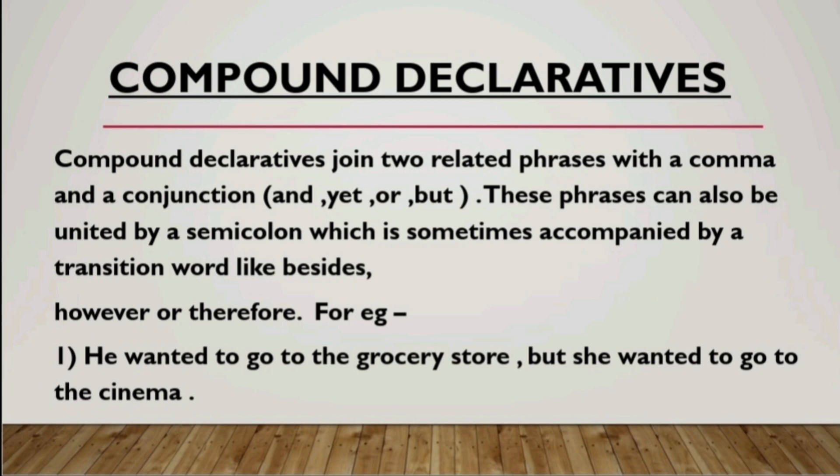Have a look at this example: 'He wanted to go to the grocery store, but she wanted to go to the cinema.' Here two clauses as well as two phrases are joined. 'To the grocery store' is a phrase, and then a conjunction 'but' is added — 'she wanted' is a clause, and 'to go to the cinema' is again a phrase. So a compound declarative is joined with either a comma and a conjunction, or a semicolon and words like 'besides,' 'however,' or 'therefore.'